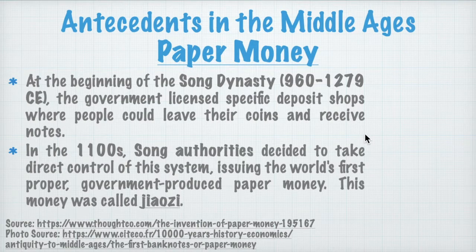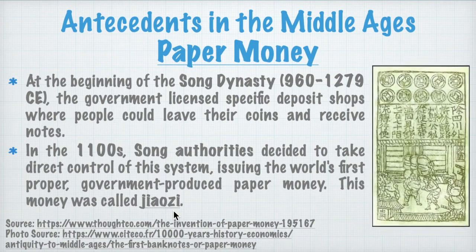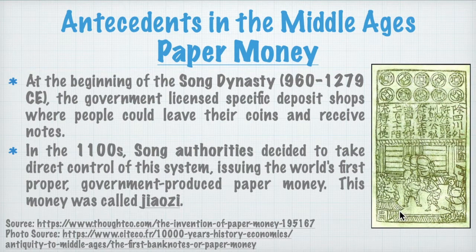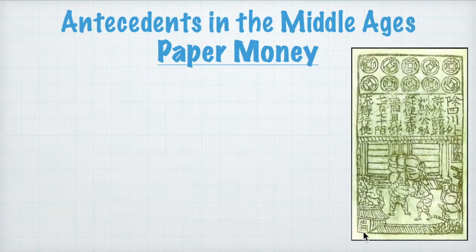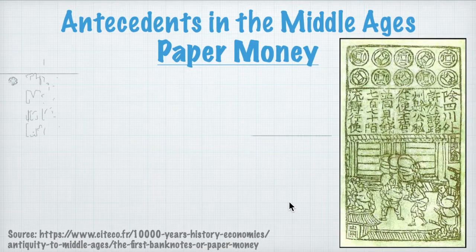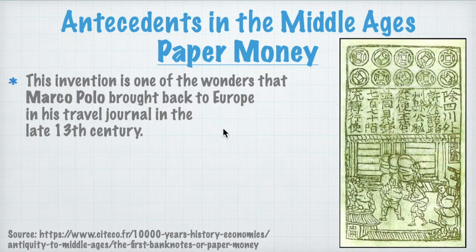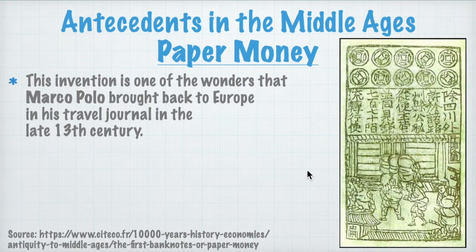In the 1100s, the Song dynasty authorities decided to take direct control of this system, issuing the world's first proper government-produced paper money, called 'jiaozi.' This invention was one of the wonders that Marco Polo himself brought back to Europe in his travel journal in the late 13th century. History was then made when the first bank bills were issued by a Swiss bank, and that's what we're using in modern times.